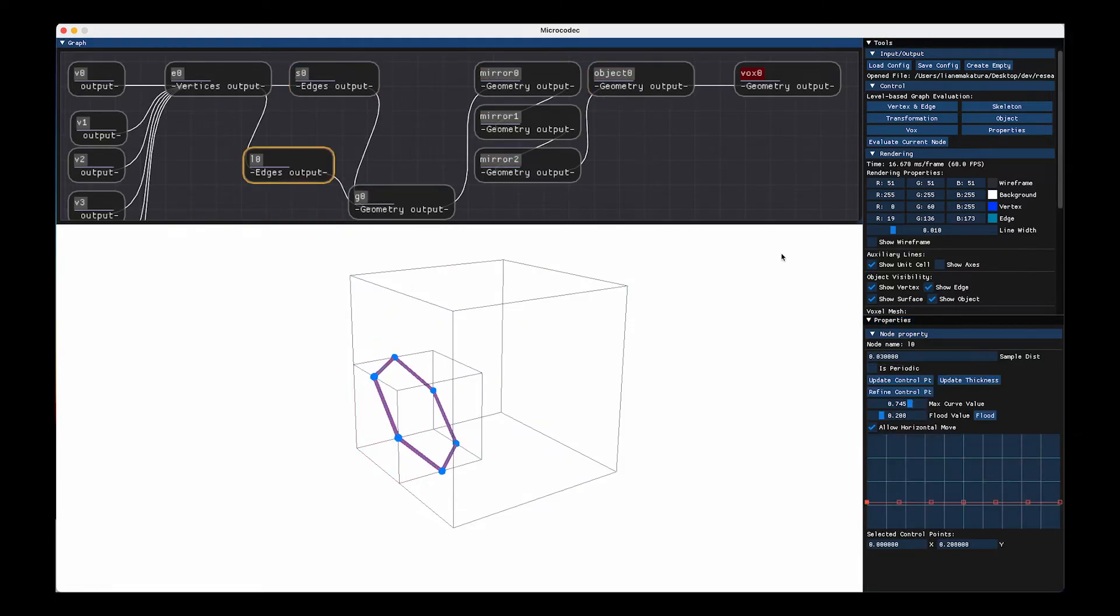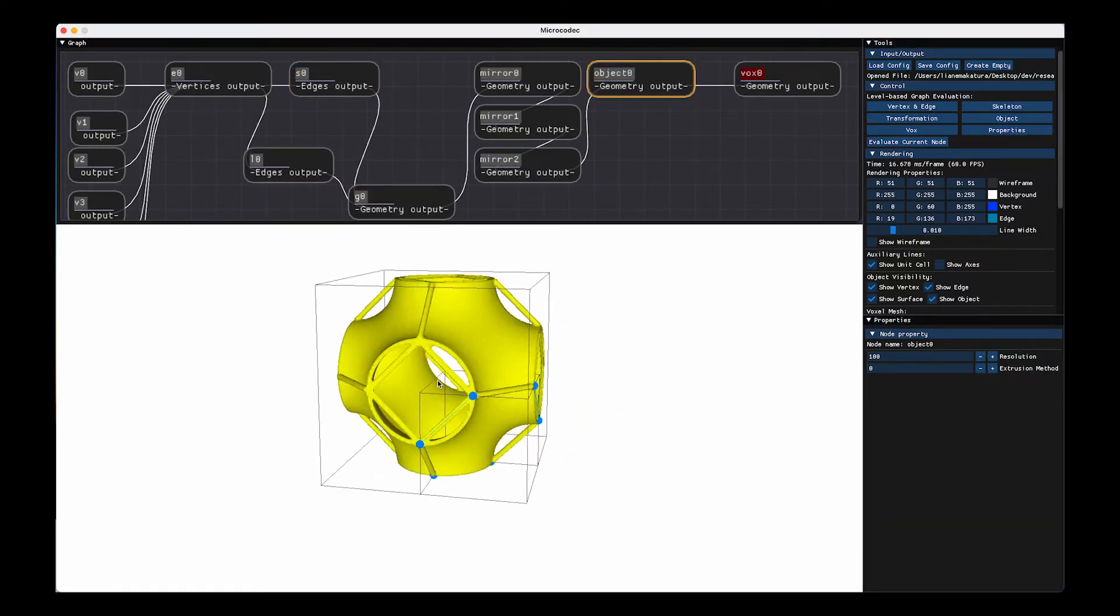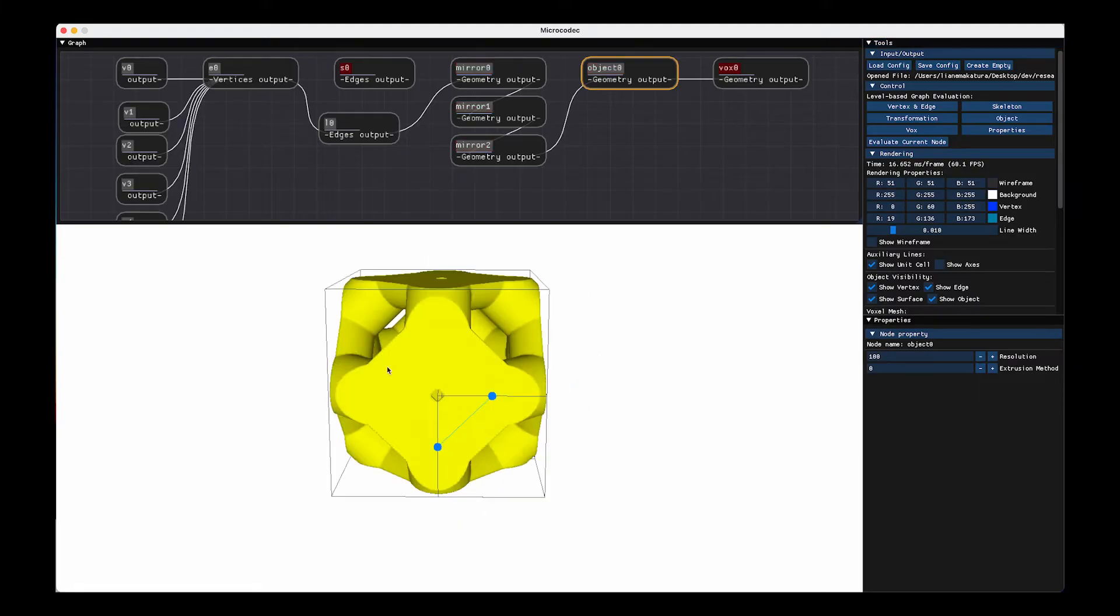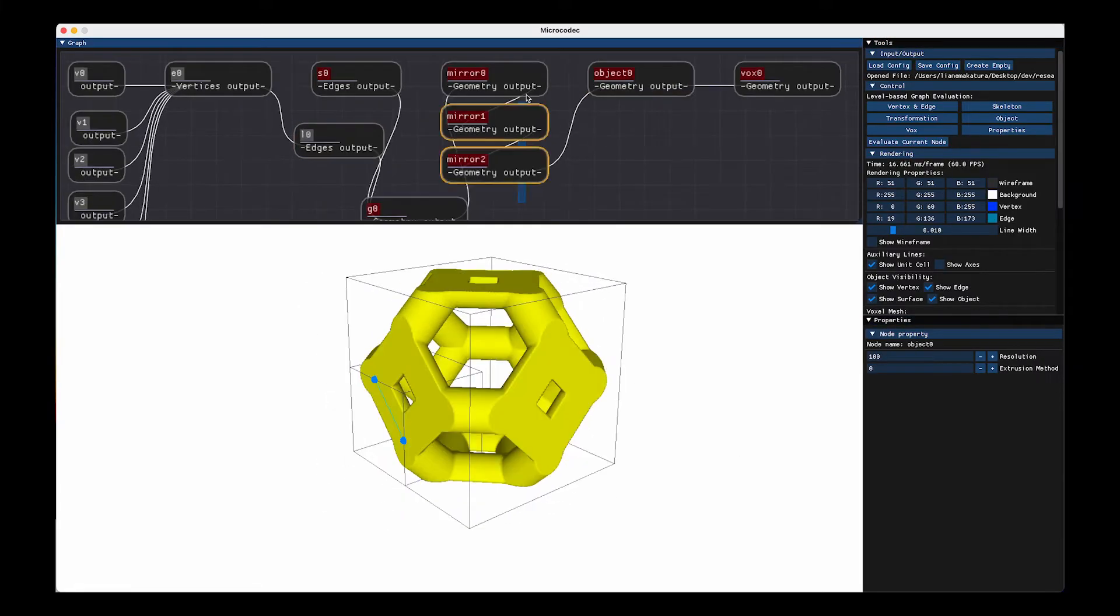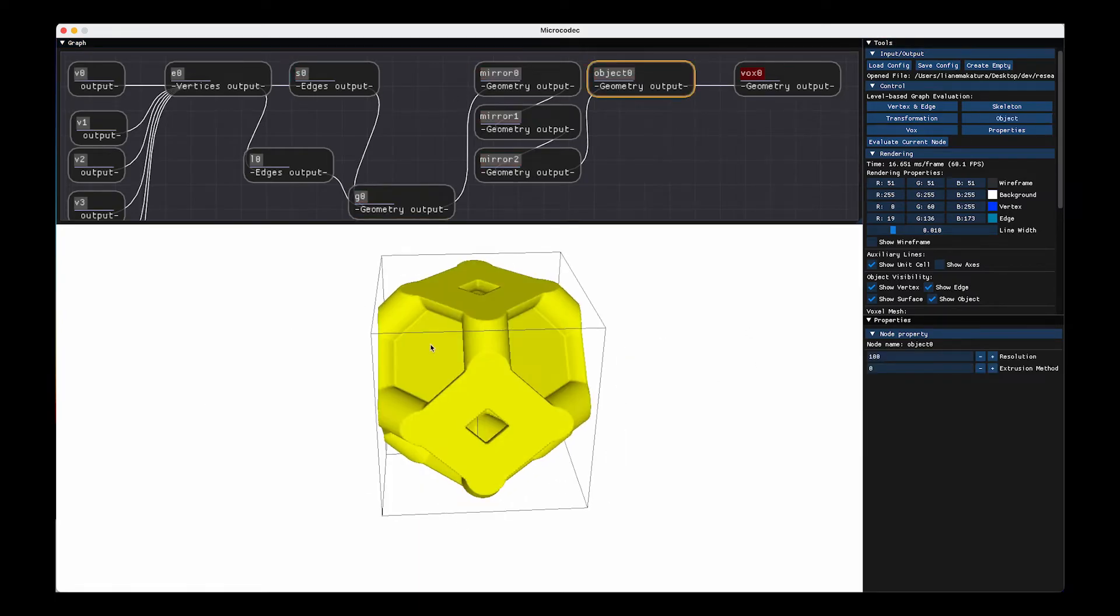Computational design is very interesting because there are fewer physical prototypes that need to be made along the way in order to justify the design approach that you are taking or to understand the behavior it's going to have in the real world.